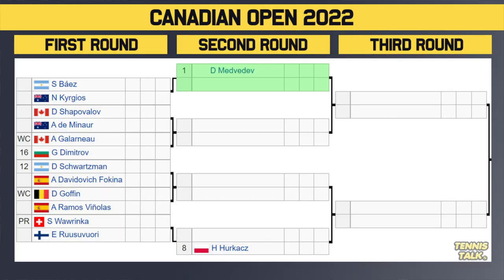Here is the draw. The top eight seeds are getting a bye in the first round. Daniel Medvedev is the number one seed and gets a bye. He will take on the winner of Baez taking on Kyrgios in the first round, so maybe we're getting a Medvedev versus Kyrgios second round. Then you've got Shapovalov versus Dimonov — a very fun first round matchup. The winner will take on either Gela Gelaanu, the wild card from Canada, or Dimitrov, the 16th seed.